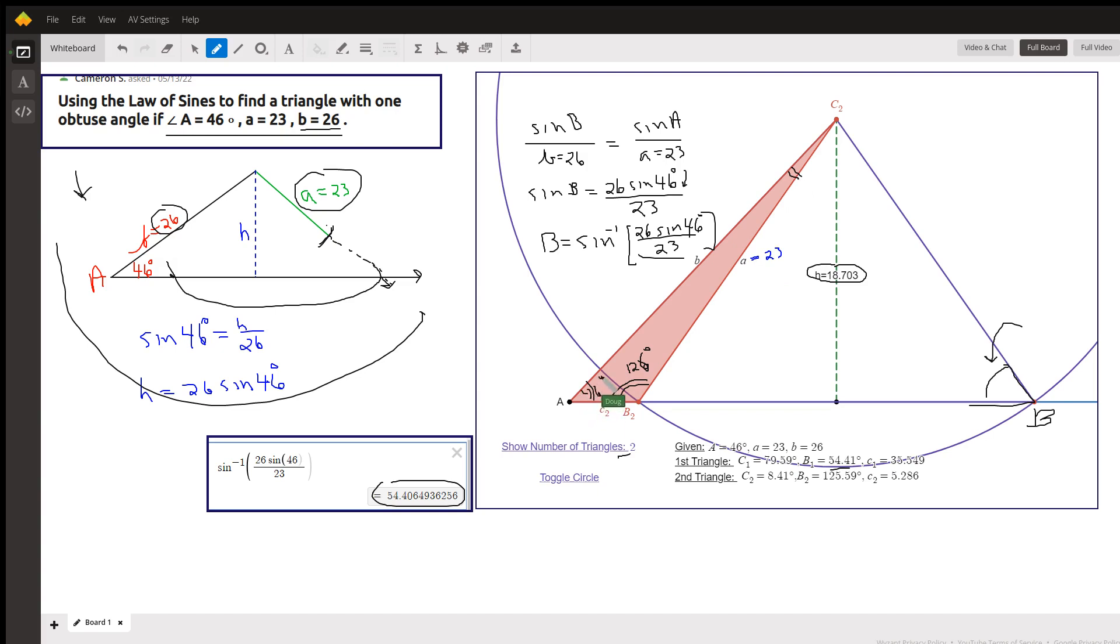And that's where this 8 degrees comes from, 8.41. And finally, to get the length of this little side right here, we use the law of sines again.